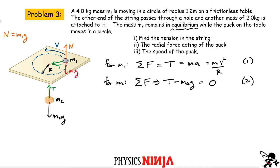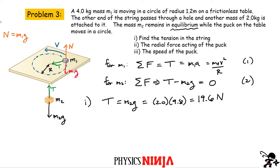To find the tension, we use equation two (for m2): T − m2g = 0, so T = m2g = 2 × 9.8 = 19.6 N. The radial force acting on puck m1 is also the tension T = 19.6 N, since it is the only force acting toward the center of the circle.